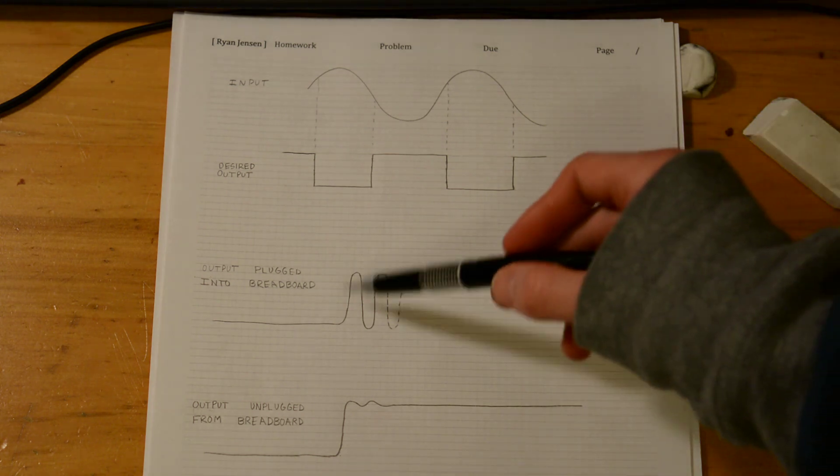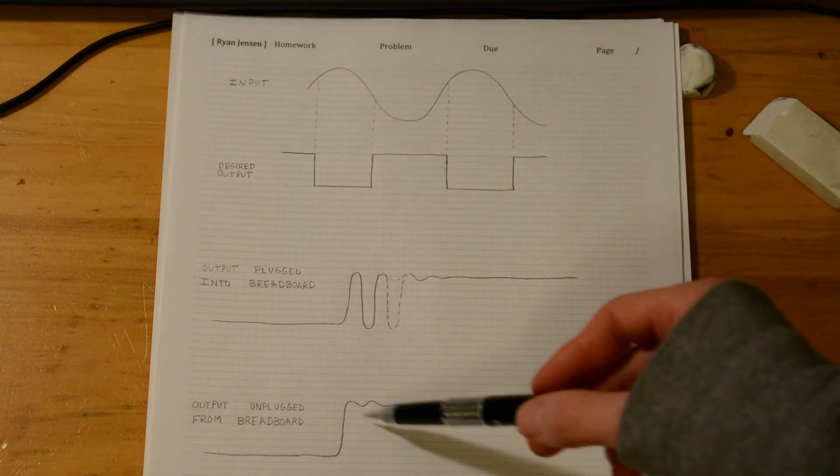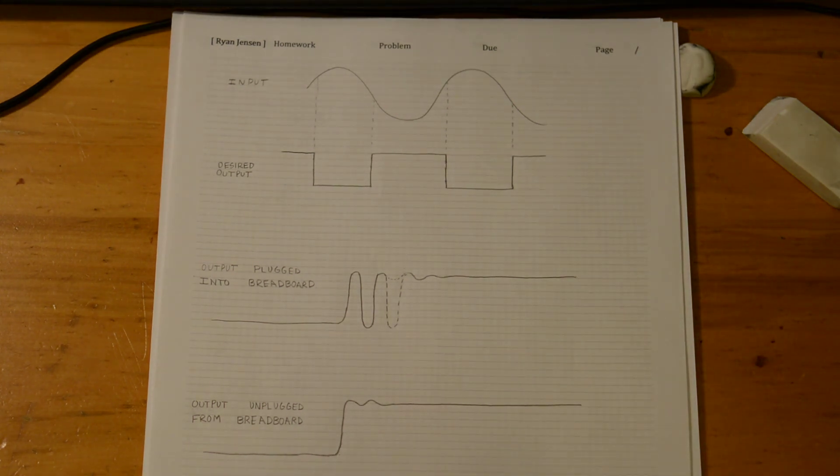The problem is some ringing that I was seeing at the edges of the square wave. My microcontroller will be counting edges and I'd prefer to send it clean edges so it doesn't double or triple count on glitches.